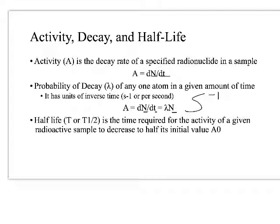Half-life, or T-one-half — often written as T sub one-half — is the time required for the activity of a given radioactive sample to decrease by half its initial value, A sub zero. A sub zero is the initial activity — the activity at time zero, when no time has elapsed. The half-life is the amount of time required to reduce that activity by half.